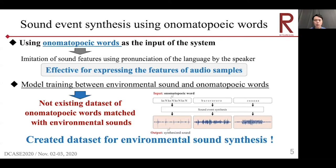We consider using onomatopoeic words as input to a deep learning model to control synthesized sounds. Onomatopoeic words are imitations of sound features using the pronunciation of a language by the speaker, and are said to be effective for expressing the features of audio samples. To realize this approach, we must model the relationship between environmental sounds and onomatopoeic words. Furthermore, to train this relationship, we need a dataset of onomatopoeic words matched with environmental sounds. But to the best of our knowledge, no such dataset exists. So we created a dataset of onomatopoeic words matched with environmental sounds for environmental sound synthesis.